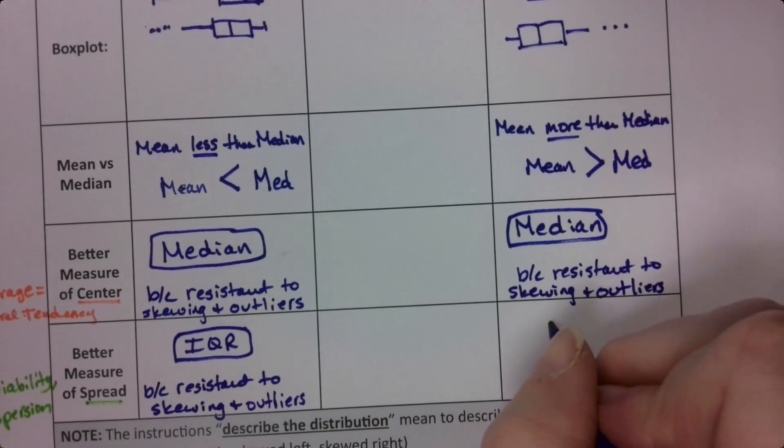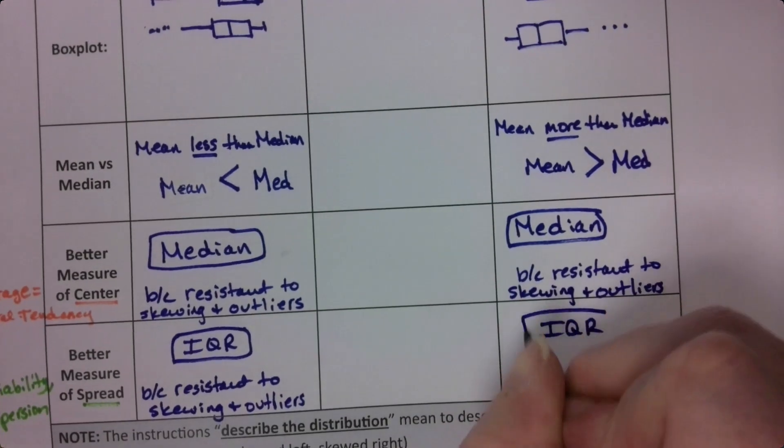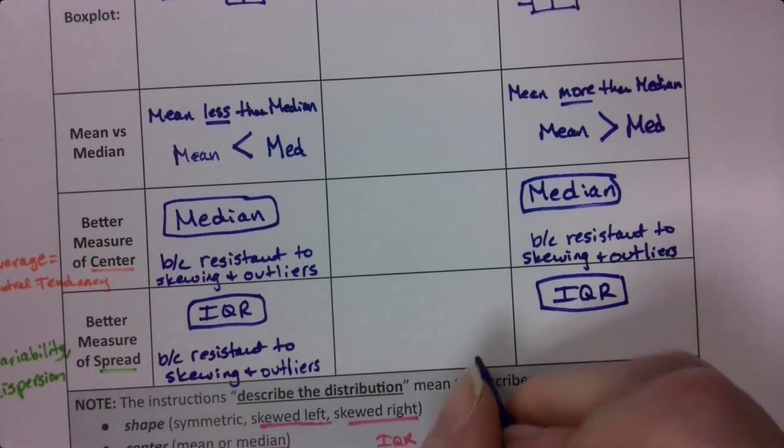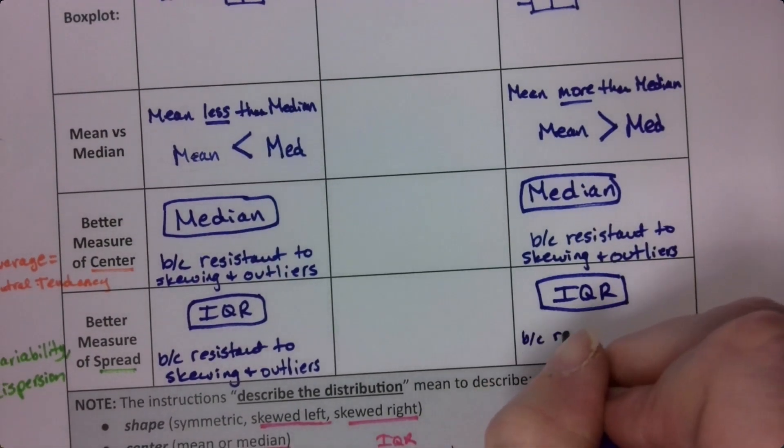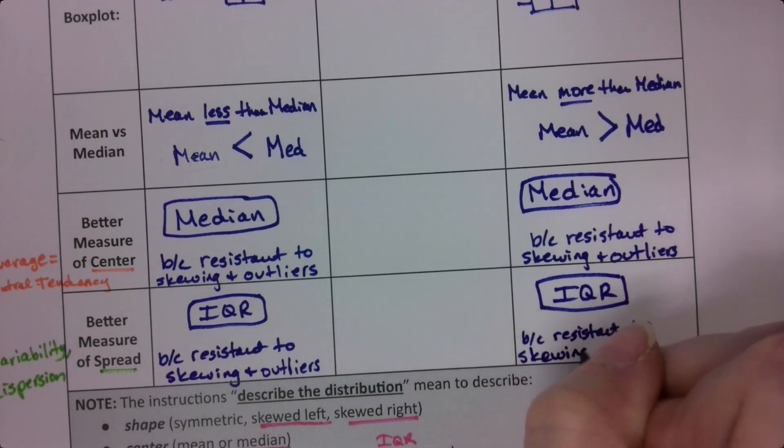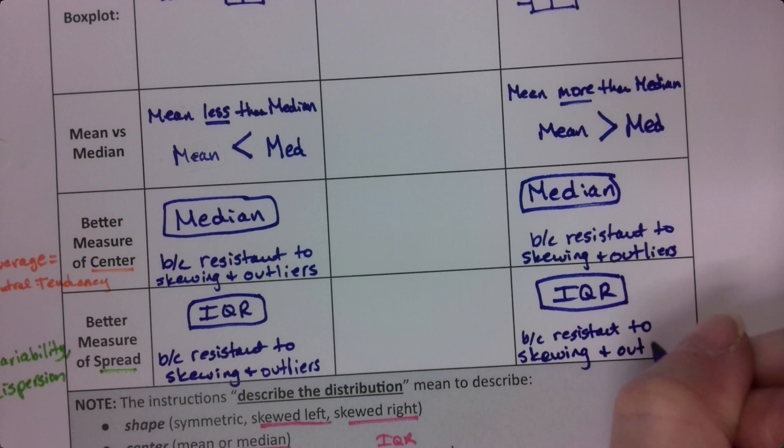And also, by the same token, the IQR is the better measure of spread. Again, because it's resistant to skewing. It's like an anchor. It stays pretty stable even with outliers and skewing.